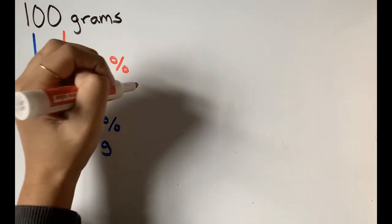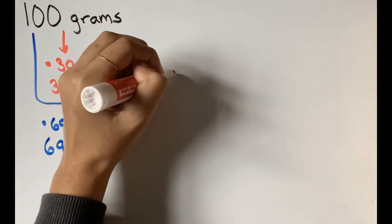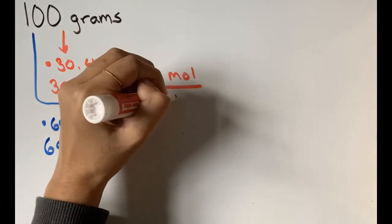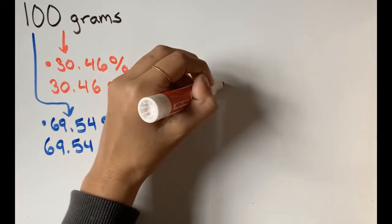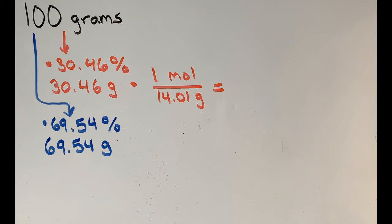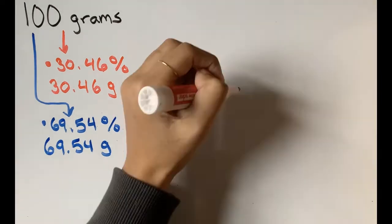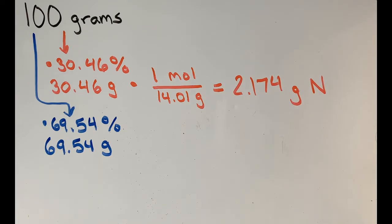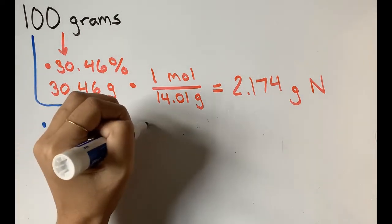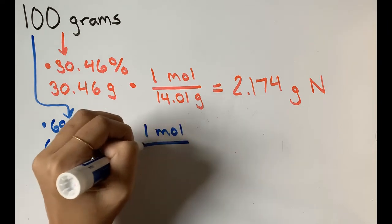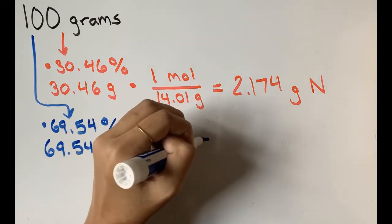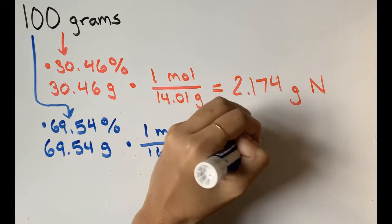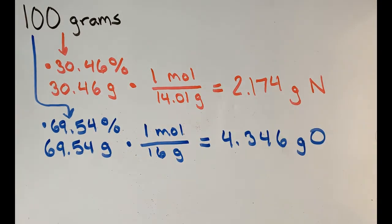Let's convert these to moles. 30.46 grams nitrogen times 1 mole nitrogen over 14.01 grams of nitrogen, which is its molar mass, will give us about 2.174 moles of nitrogen. And 69.54 grams of oxygen times 1 mole of oxygen over 16 grams of oxygen, its molar mass, should give us about 4.346 moles of oxygen.